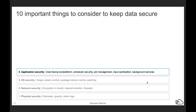Moving on to number four: application security. This includes user-facing tools and platforms for internal users, contractors, or customers. For HPC specifically, there's usually a scheduler for on-premises systems, so you want to consider its security. If you have tools that manage jobs, you want proper security around those. You want to do input sanitization if users of different groups and projects use the same service. If you have background services such as billing or usage reporting, you want proper security around those as well.